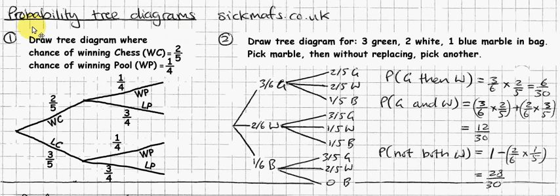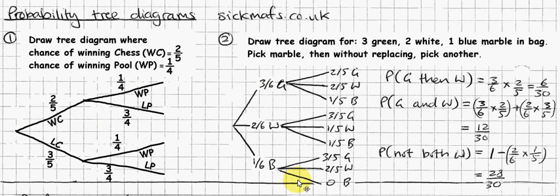This video is about probability tree diagrams. Tree diagrams basically look like this — they look like sideways trees. Even in tree diagrams, they call these things branches. You've got two branches, and then branches coming out of branches. You've got three branches, and then three more branches coming out of each of those.